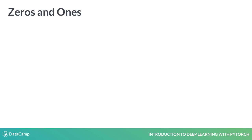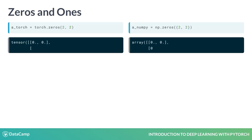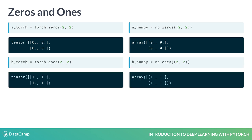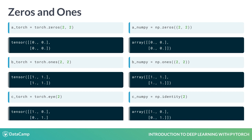Some special types of matrices are matrices of zeros, matrices of ones, and identity matrices. These matrices in PyTorch can be created by using torch.zeros, torch.ones, and torch.eye functions, very similar to NumPy's numpy.zeros, numpy.ones, and numpy.identity.